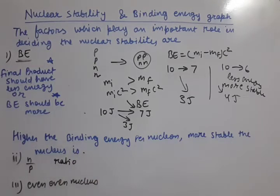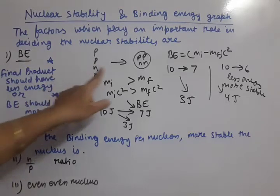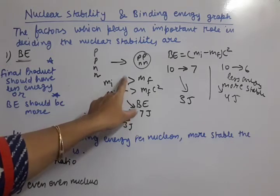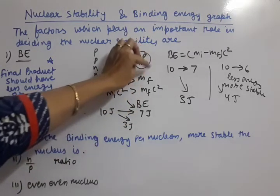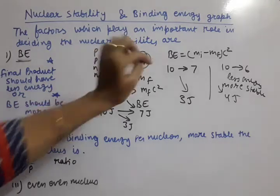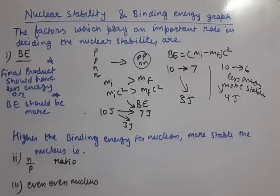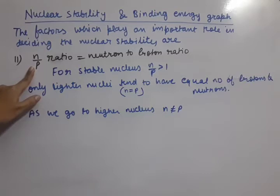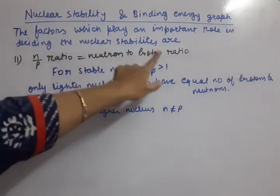So we have discussed how binding energy decides the stability of the nucleus — greater the binding energy in any event, lesser the energy of the final nucleus, meaning it will be more stable. Now let us move to the second factor: the neutron to proton ratio (N/P ratio), which also decides nuclear stability.